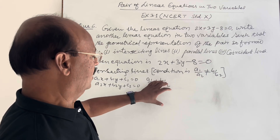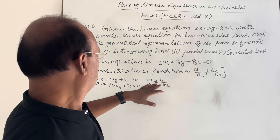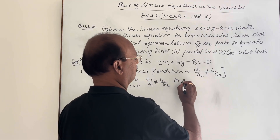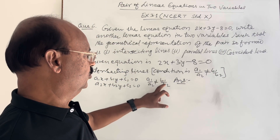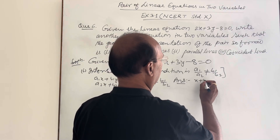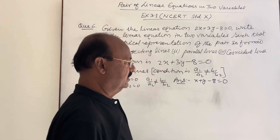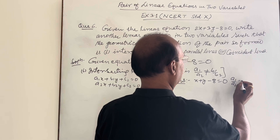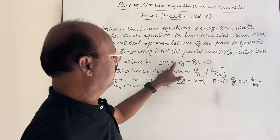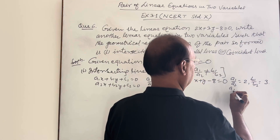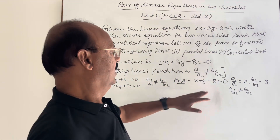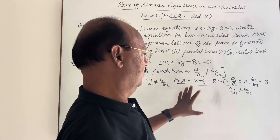The condition for intersecting lines is a1/a2 ≠ b1/b2. On the basis of this condition, we can write another equation which intersects the given equation. Let us try x + y - 8 = 0. Checking: a1/a2 = 2/1 = 2, and b1/b2 = 3/1 = 3. Since 2 ≠ 3, the condition a1/a2 ≠ b1/b2 is fulfilled. So the answer for case 1 is x + y - 8 = 0.